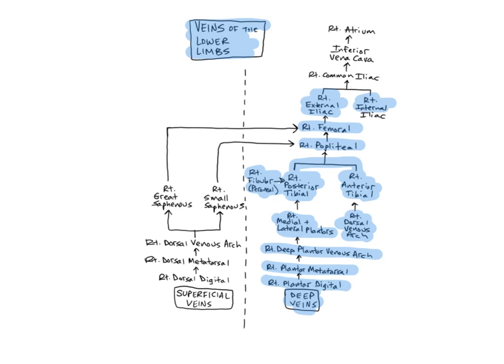The internal iliac veins begin near the superior portion of the greater sciatic notch of the pelvic bone, and run medially to empty into the common iliac veins. They drain the muscles of the pelvic wall and gluteal region, pelvic viscera, and external genitals.